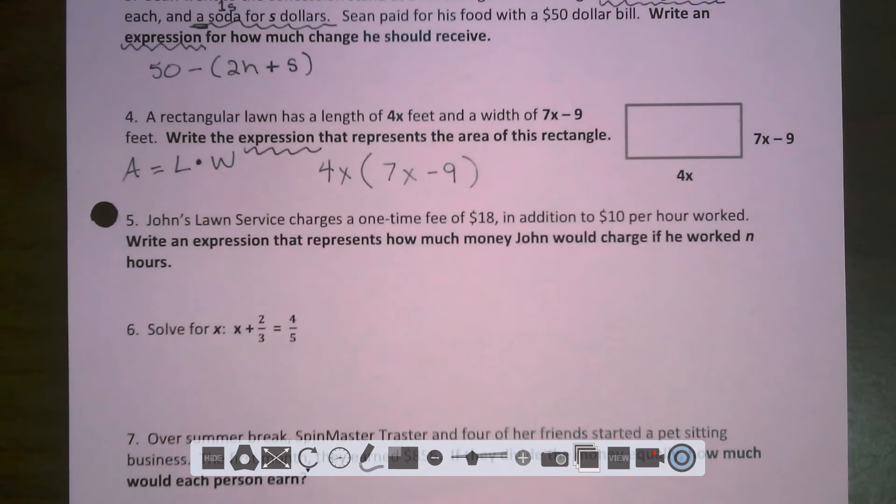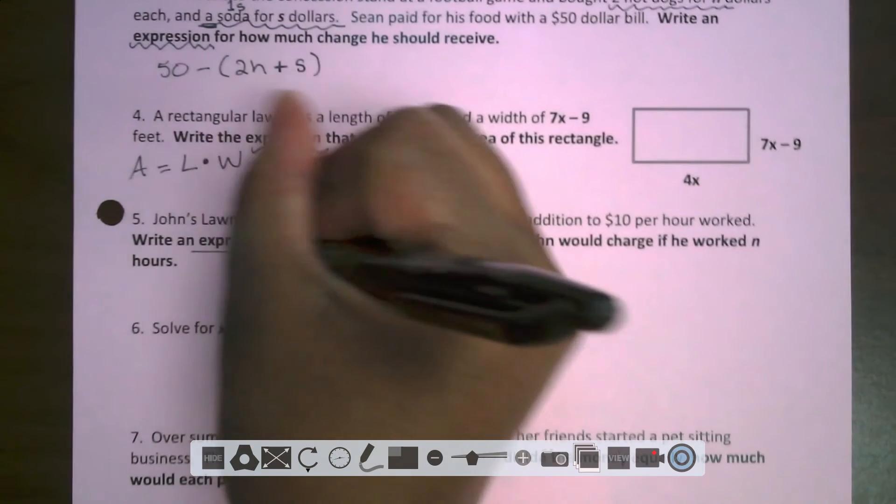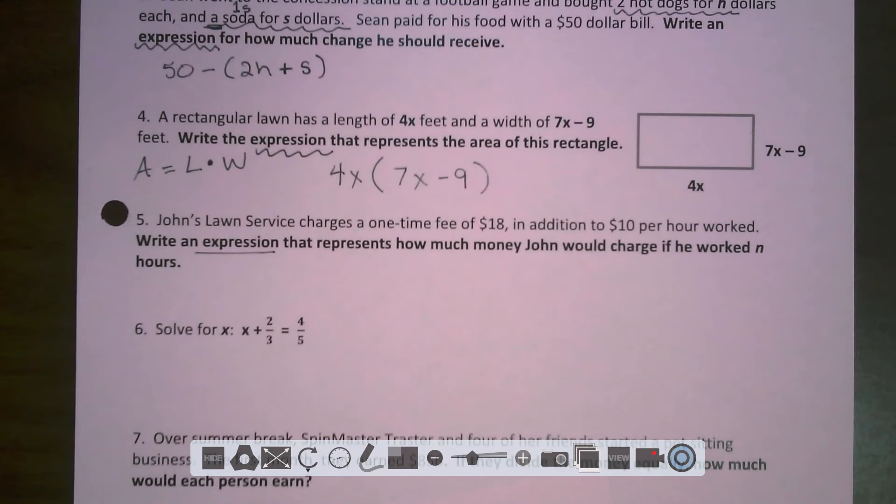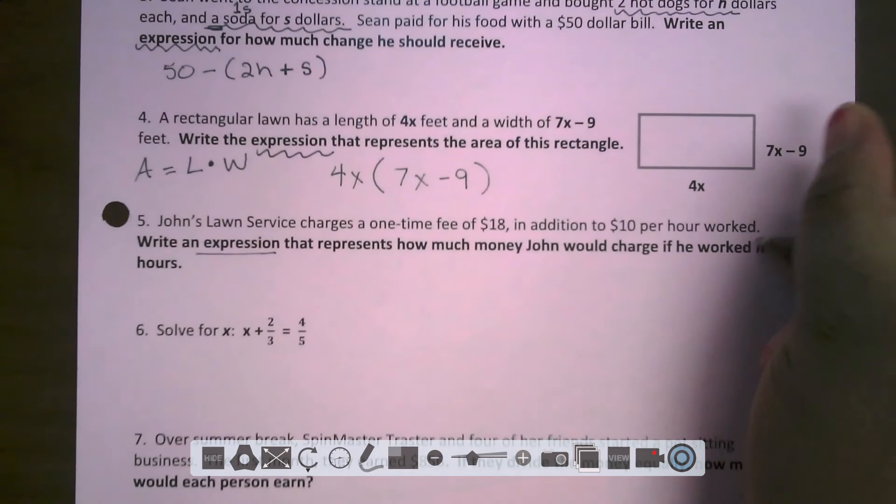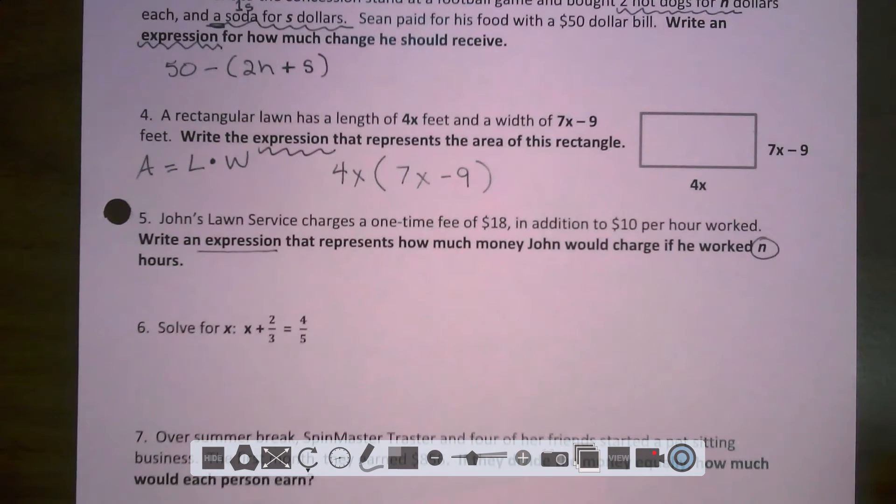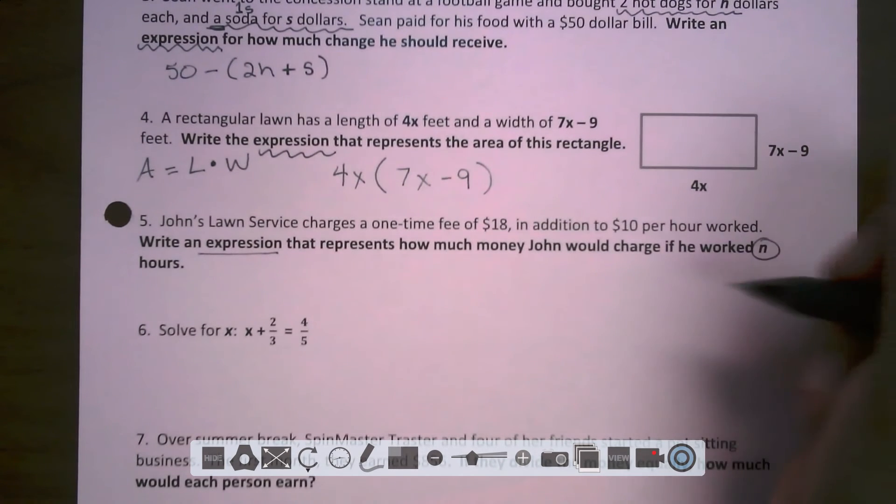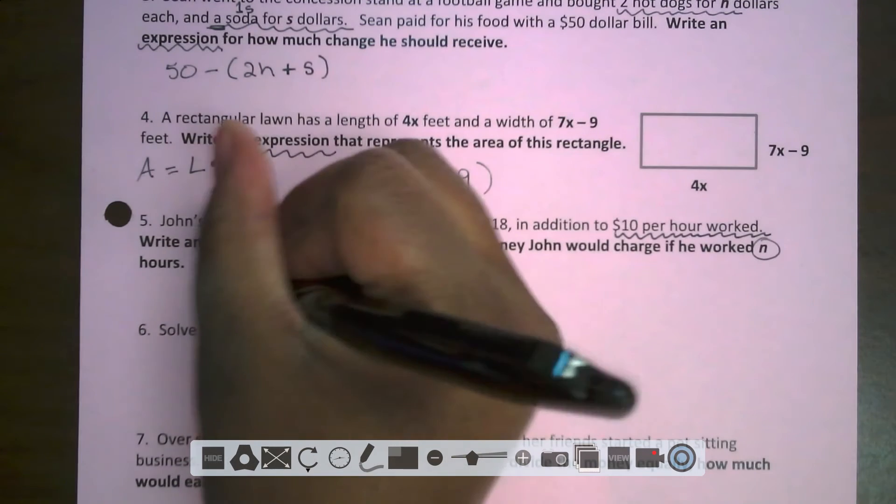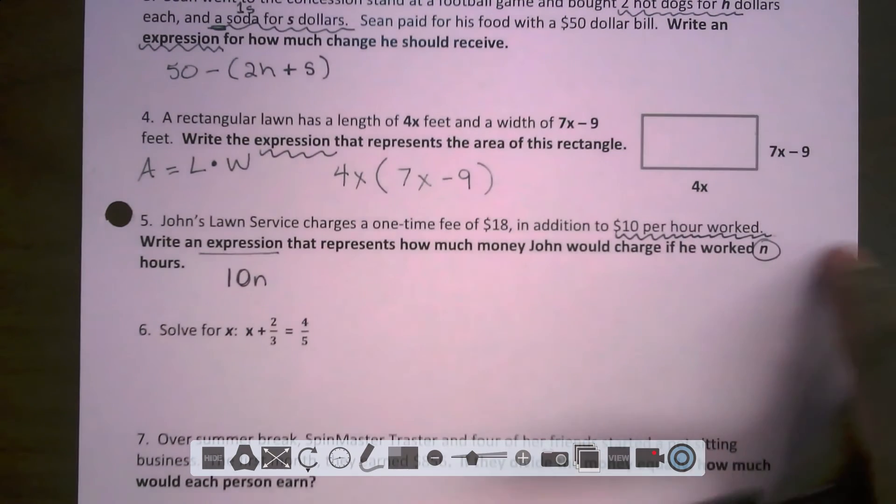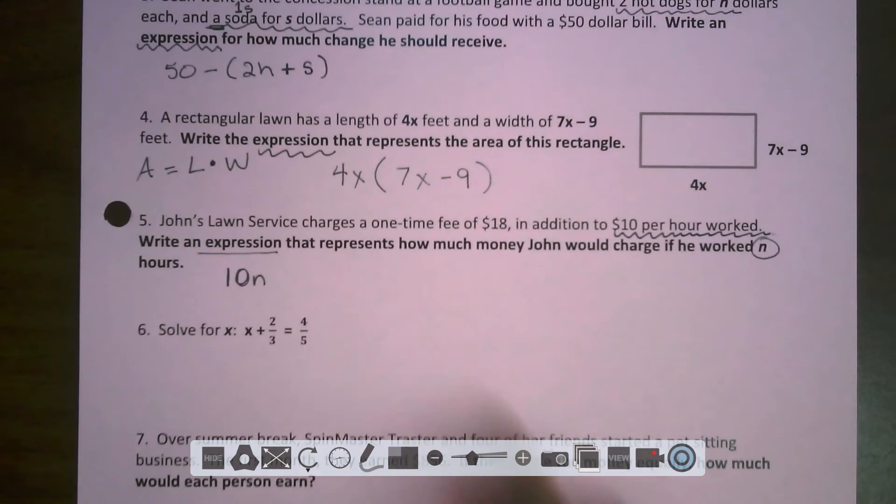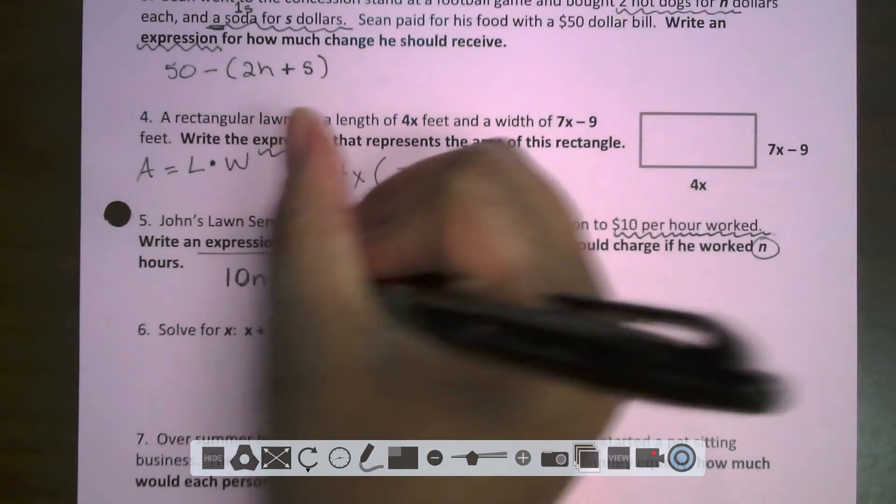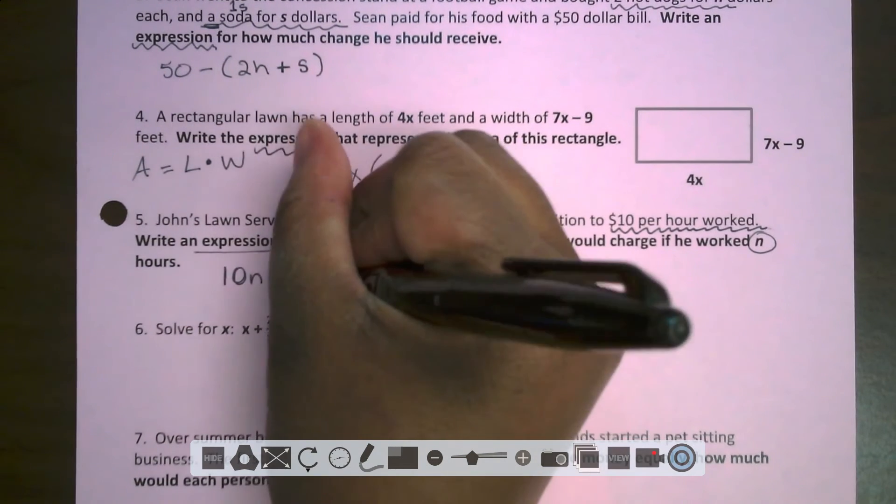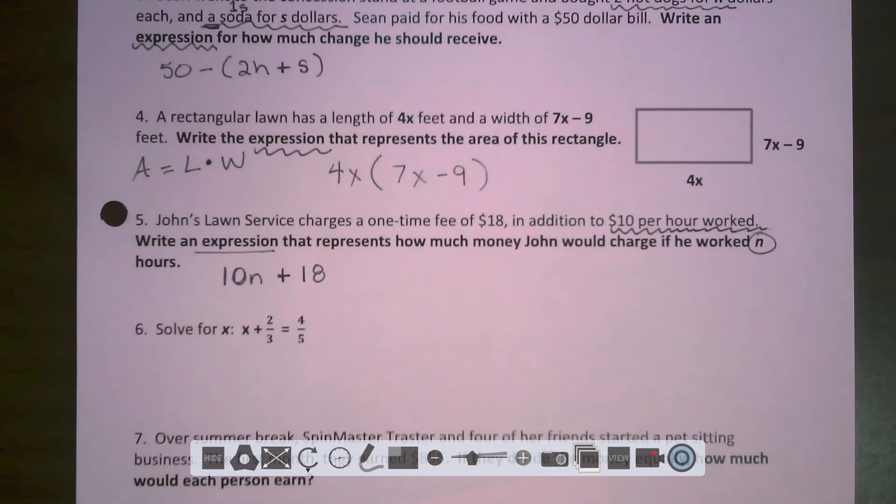Number five. John's lawn service charges a one-time fee of $18 in addition to $10 per hour work. Write an expression that represents how much money John would charge if he worked N hours. That N is representing the hours worked, and it says $10 per hour work. So that means I know right off the top, I have 10 N. $10 times the amount of hours. But then we have the one-time fee of $18. So once we calculate that 10 N, we then have to add the $18. And boom, that's my expression.